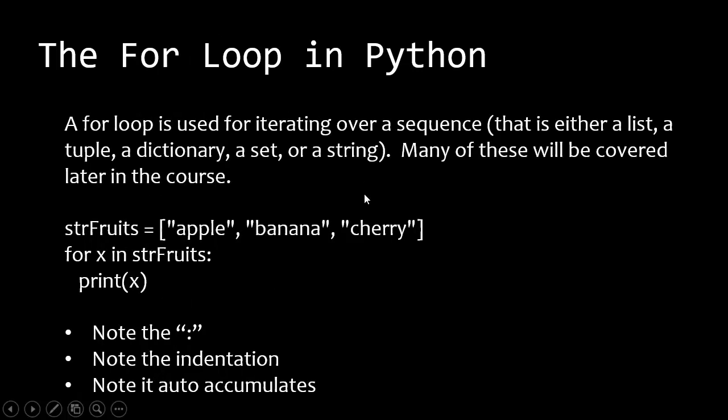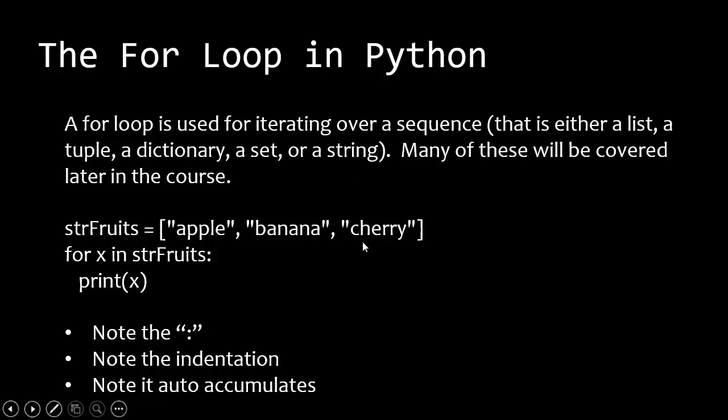The for loop is the second type of loop in Python. The for loop is used for iterating over a sequence — that is either a list, a tuple, a dictionary, a set, or a string. These things are called arrays in a lot of languages. Most of you, probably at this point, have not been introduced to arrays. We will come back to arrays a little bit later on in this course, but right now we're not going to cover it.